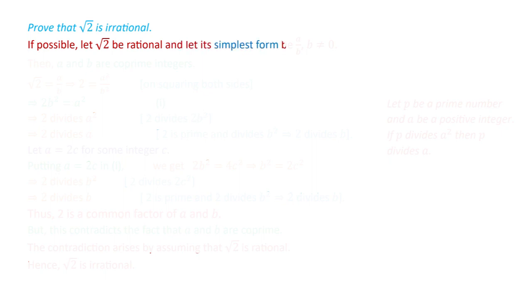We prove this by the method of contradiction. Method of contradiction means we assume that square root 2 is a rational number. If possible, let square root 2 be a rational number in its simplest form a by b, where b is not equal to 0. If a by b is in simplest form, it means a and b are co-prime integers — they have no common factor except 1.